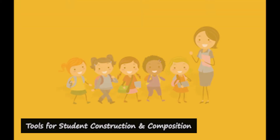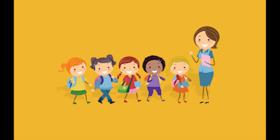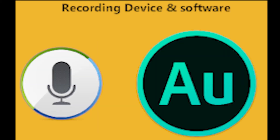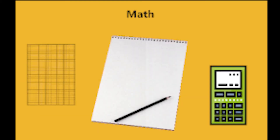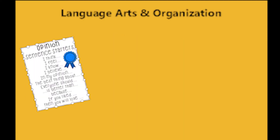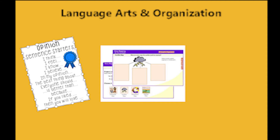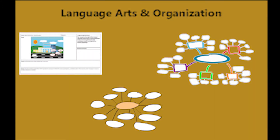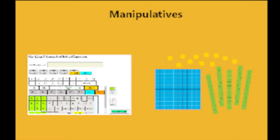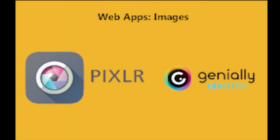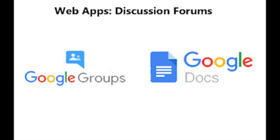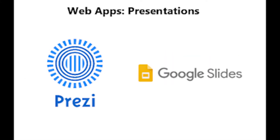Before you start offering these alternatives, there are some things you can provide to ensure students' success in completing their assessments. This may include word processing software, recording devices and software, graph paper, sketch pads, and calculators, sentence starters or strips, story maps, outlining, concepts, storyboarding, and mind mapping tools, virtual and physical manipulatives, and numerous web applications for images, videos, wikis, online discussions, and presentation design.